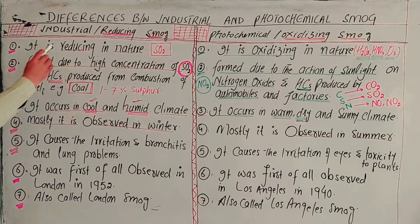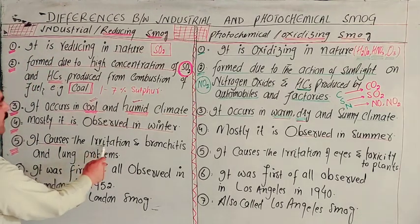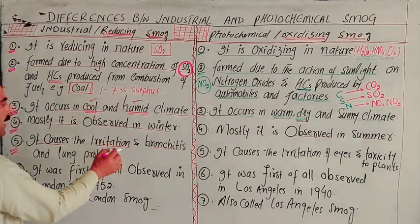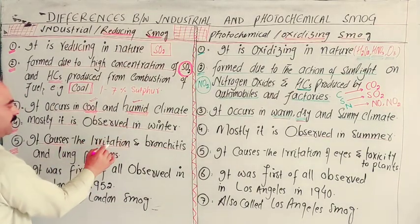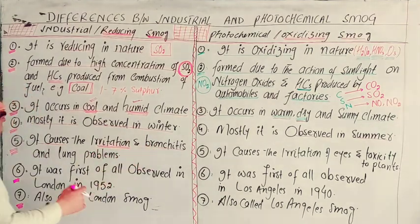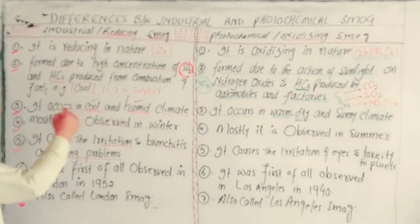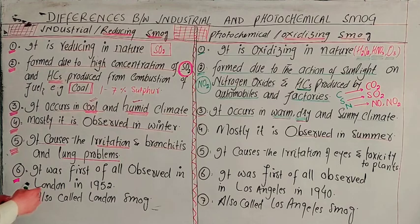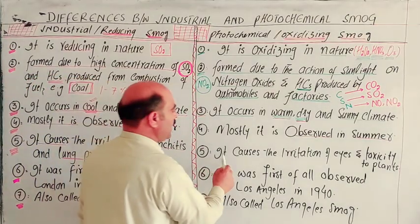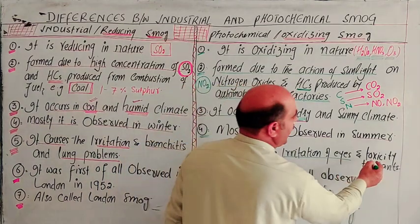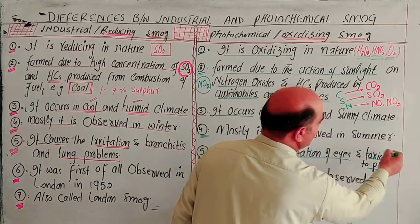Point number 4: industrial smoke causes irritation and bronchitis, and lung problems related to the respiratory system. On the other hand, photochemical smoke causes irritation of the eyes, and it is toxic to plants — it produces toxicity in plants.